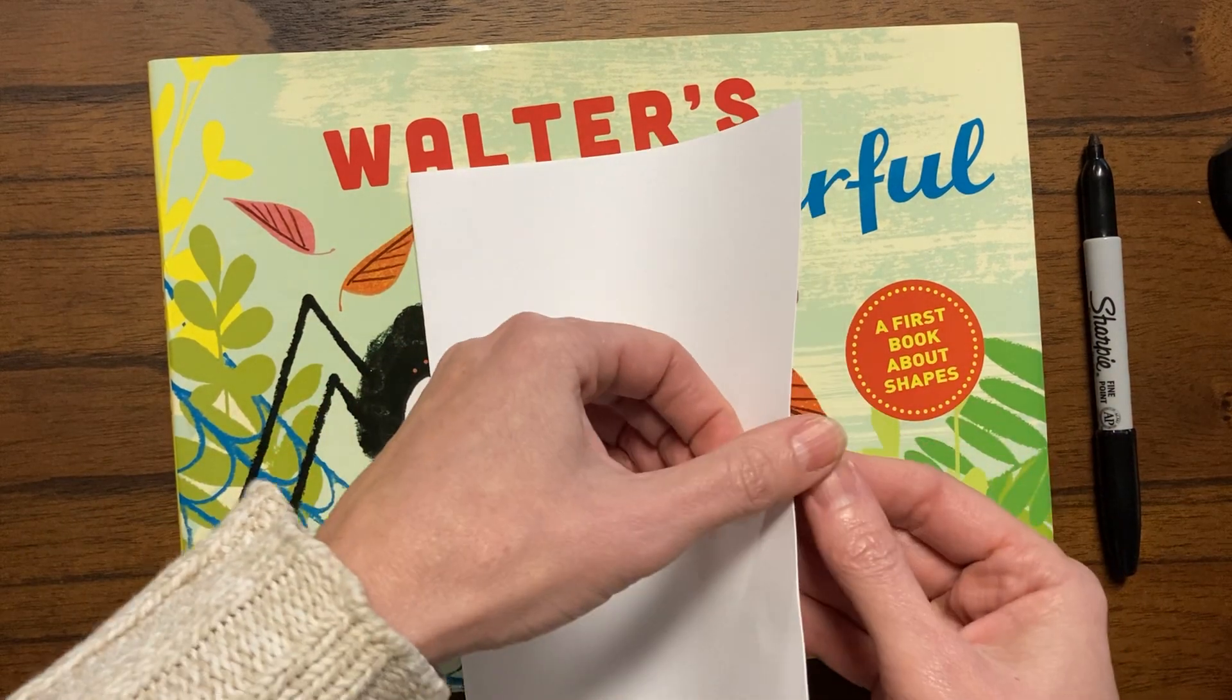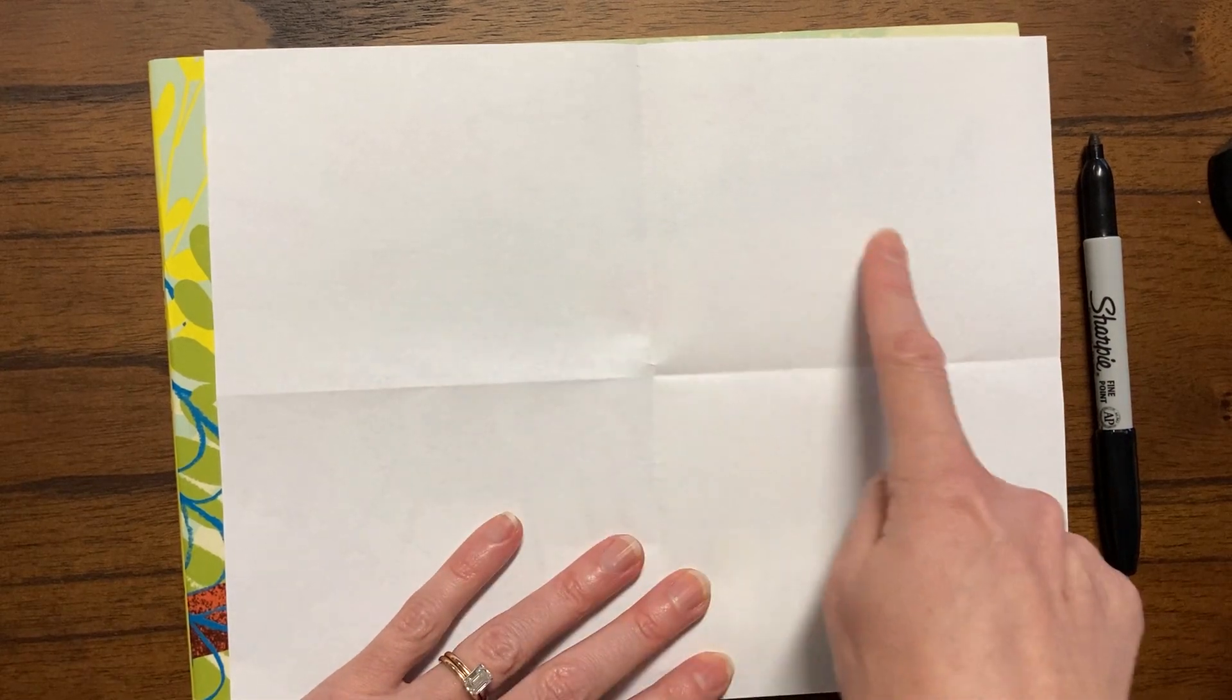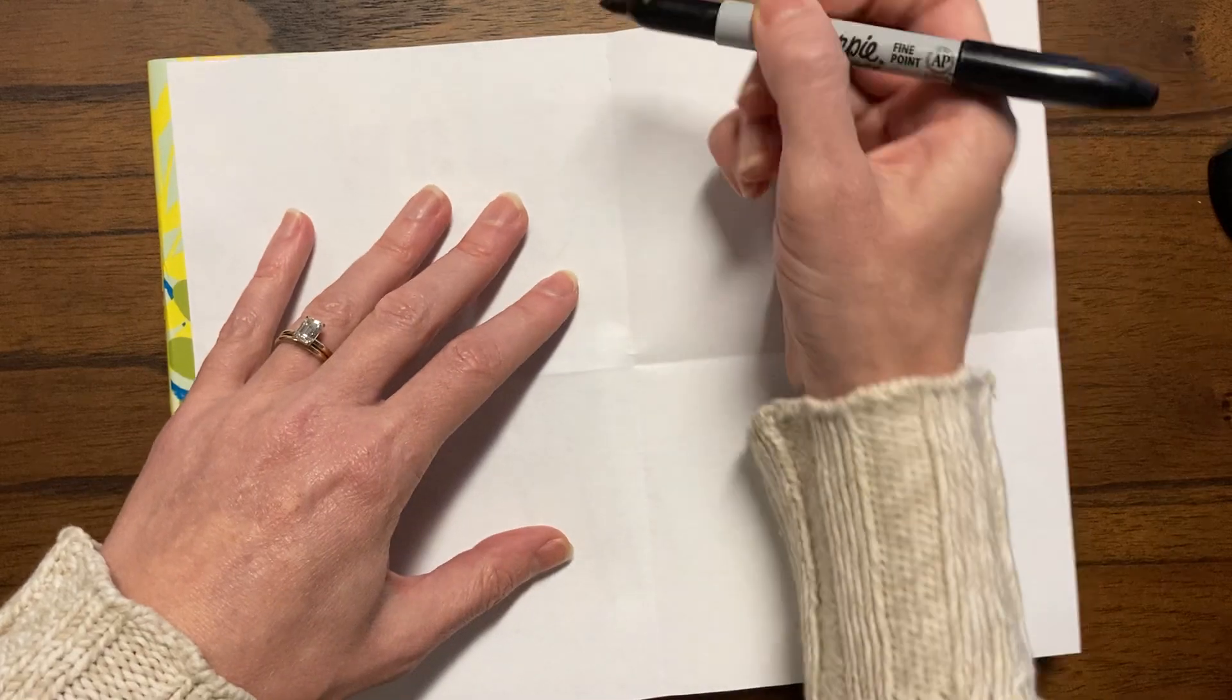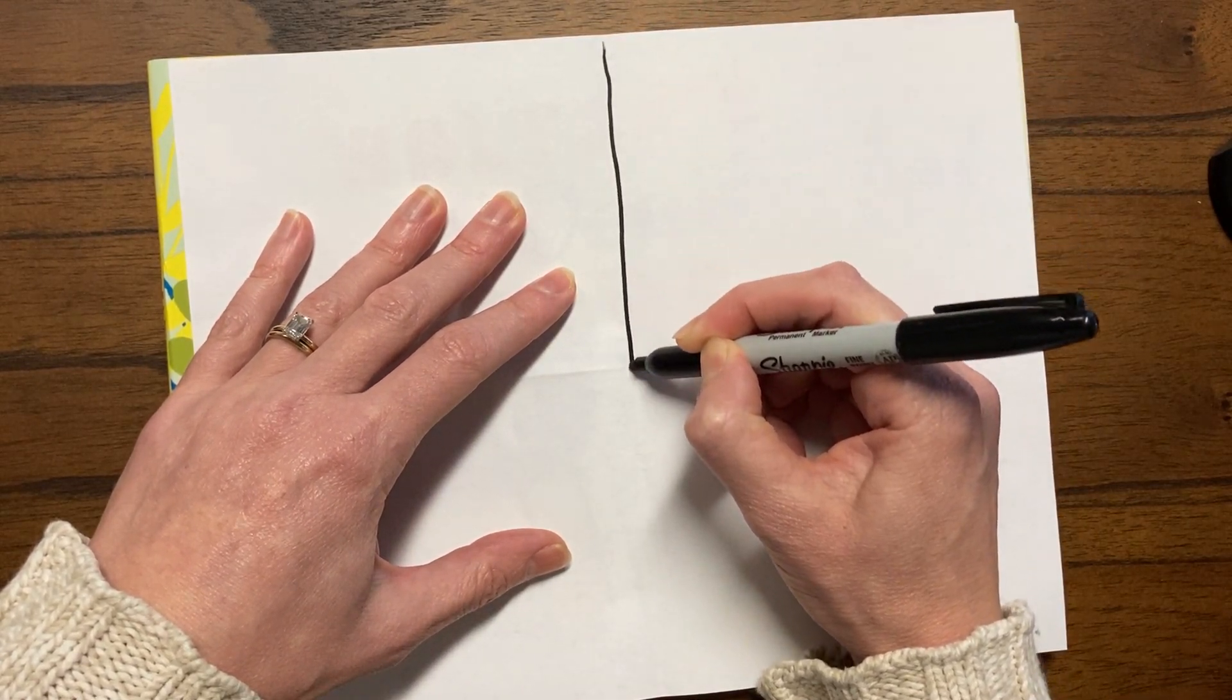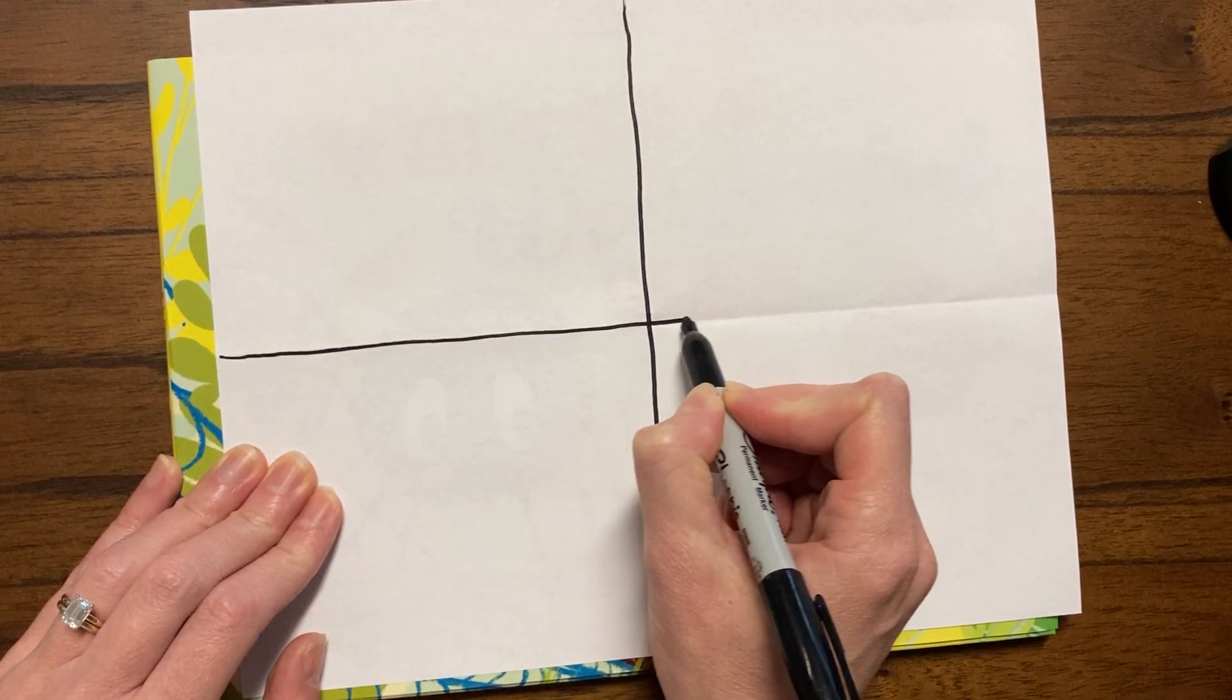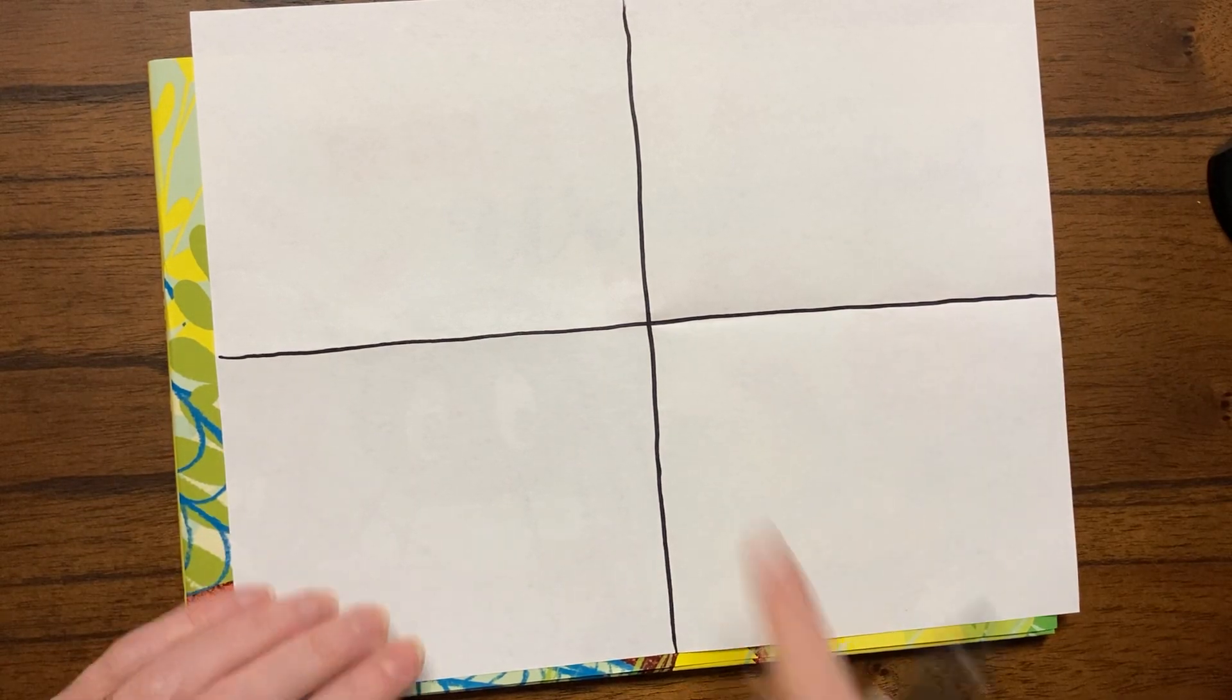So as I unfold, voila. We should have one, two, three, four sections of our paper. So there's kind of like a cross that's created. Now, if you want to, you can take your pencil and trace that line where the crease is, where the fold is. And you'll see very visibly are four quadrants. One, two, three, four.